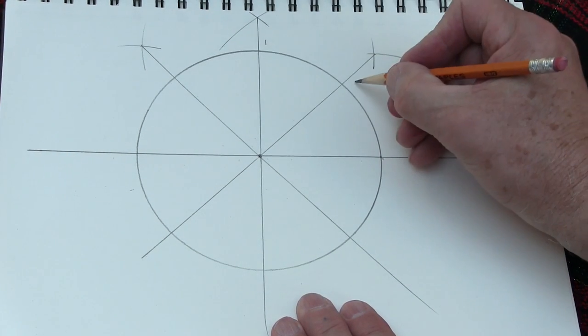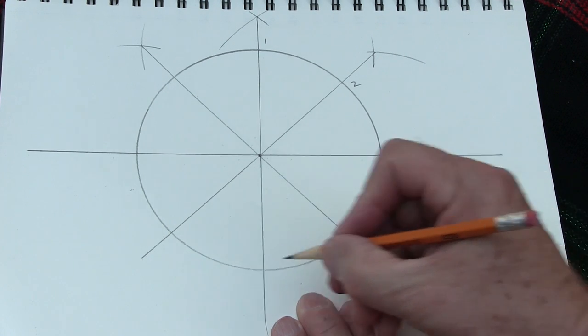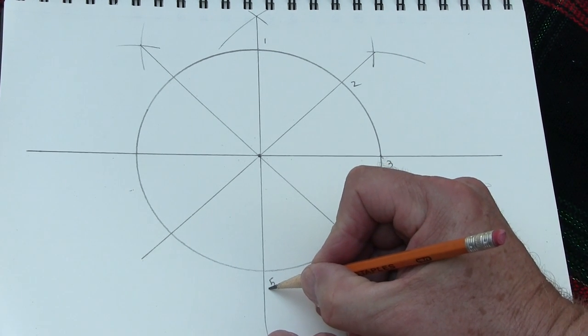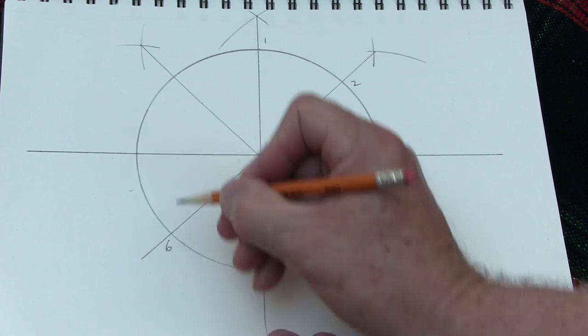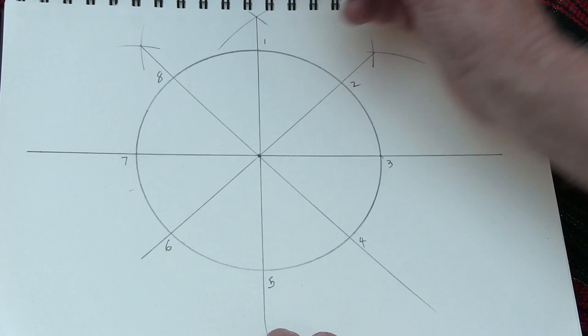And now you have eight equally spaced points of reference around the rim of the circle and you have eight 45 degree angles at the center point. You can check those with a protractor.